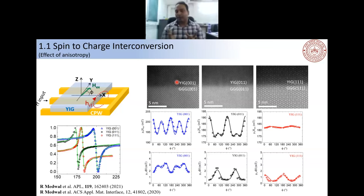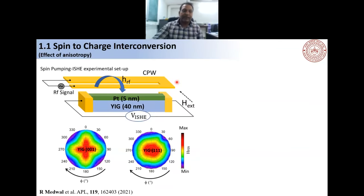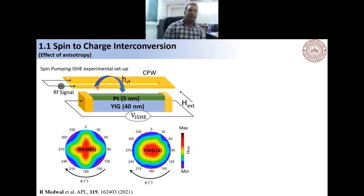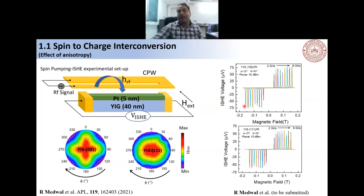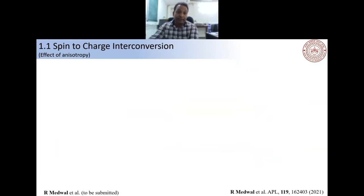Our interest was to generate magnetocrystalline anisotropy in YIG by controlling the facet growth parameters. In YIG(001), we observe cubic anisotropy in the resonance field as a function of in-plane angle φ, whereas in YIG(111) there is no cubic anisotropy. We made devices for spin pumping and inverse spin Hall effect measurements, deposited platinum on top of the YIG, performed transport measurements, and observed ISHE voltage at the YIG/Pt interface for both YIG(100) and YIG(111).